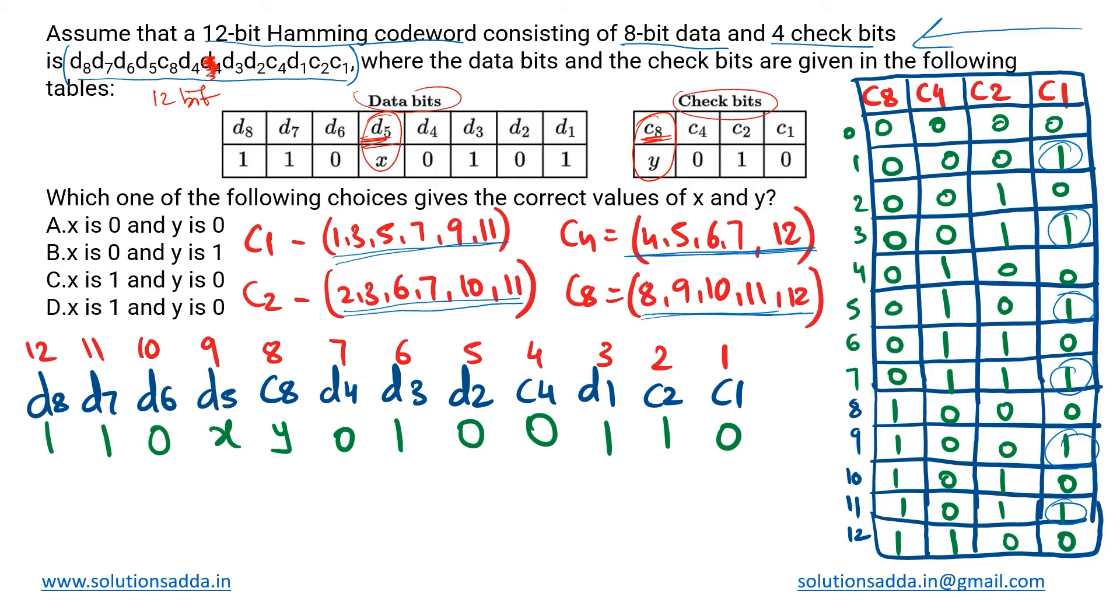Every position is handled by at least one check bit. Some can be handled by multiple check bits as you can see: position seven is in c1, c4 as well as c2. Similarly, eleven is in c1, c2 as well as c8. That is how we can detect errors in our message.